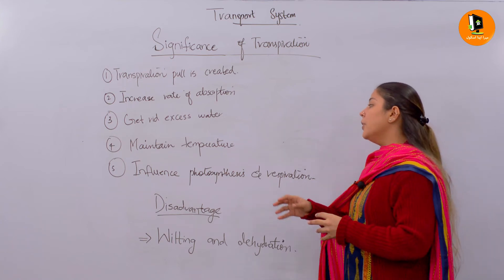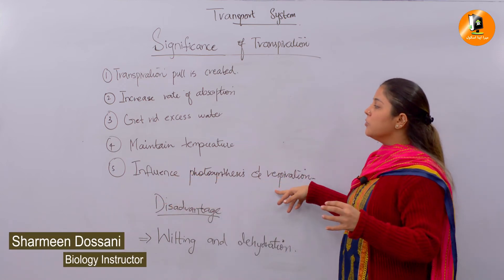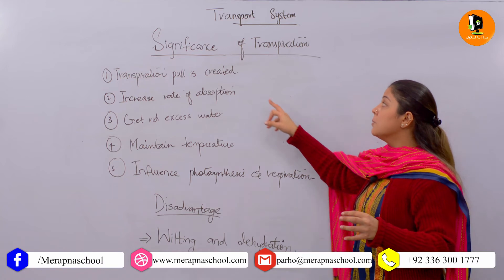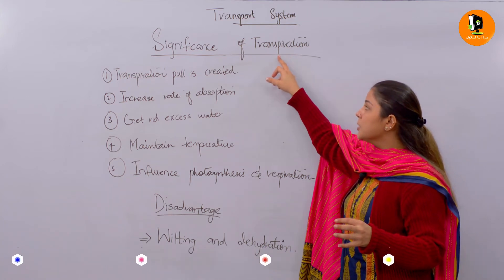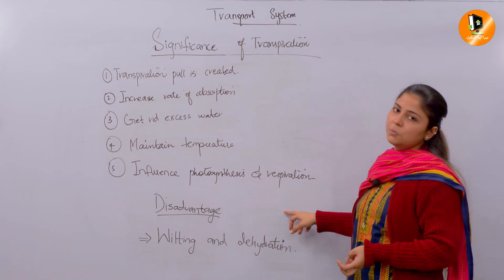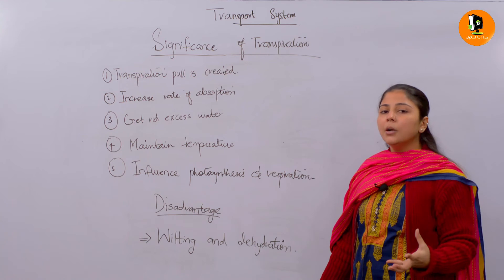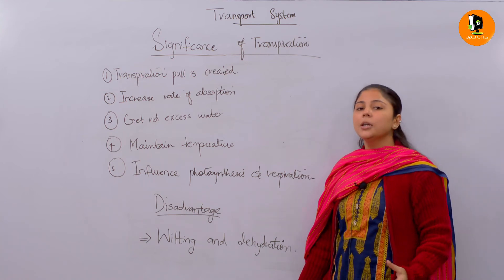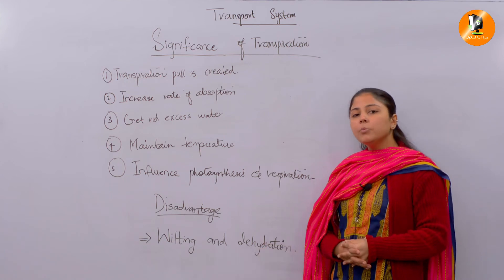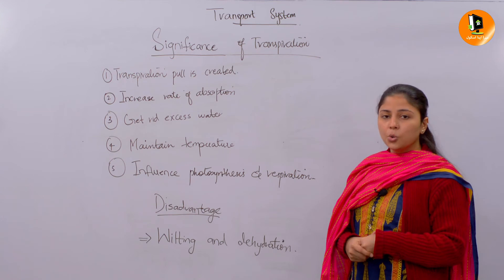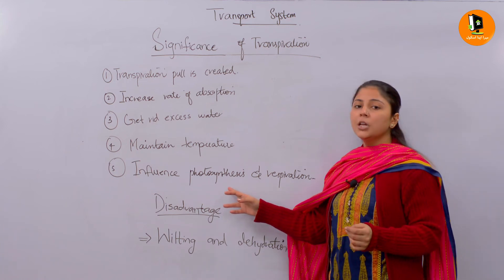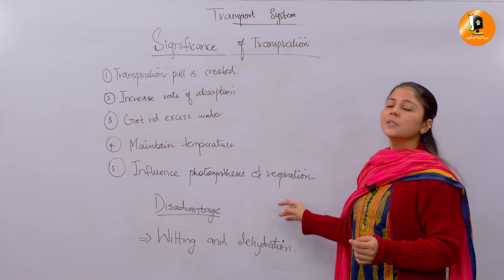The fifth important point is that transpiration influences photosynthesis and respiration. More transpiration leads to more absorption, and more absorption leads to more photosynthesis and more respiration. In photosynthesis, the raw materials needed are carbon dioxide, water, and sunlight — these combine to produce oxygen and glucose. In respiration, the raw materials needed are oxygen and glucose — the opposite of photosynthesis — and the outputs are water molecules, carbon dioxide, and ATP or energy.